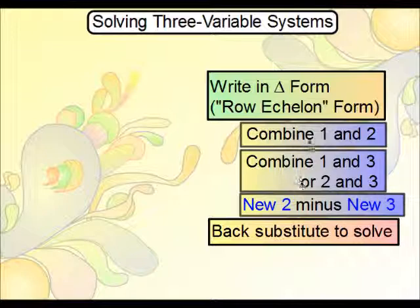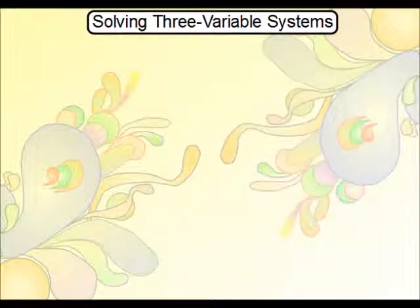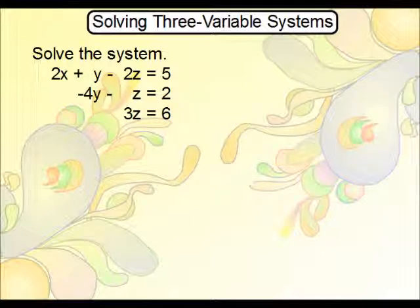These would be the steps that you would use to help rewrite a system in triangular form. So how about we get started with one problem? Let's say you get something like this. You might note that this is already in triangular form. In other words, this part here is absent. By triangular form, we mean that we have three variables in the first equation, two variables in the second equation, one in the third equation. If you have that, then you have triangular form.